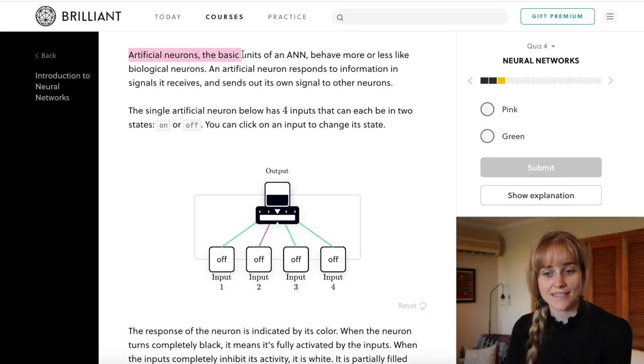Artificial neurons, the basic units of an artificial neural network, behave more or less like biological neurons. An artificial neuron responds to information and signals it receives and sends out its own signal to other neurons.